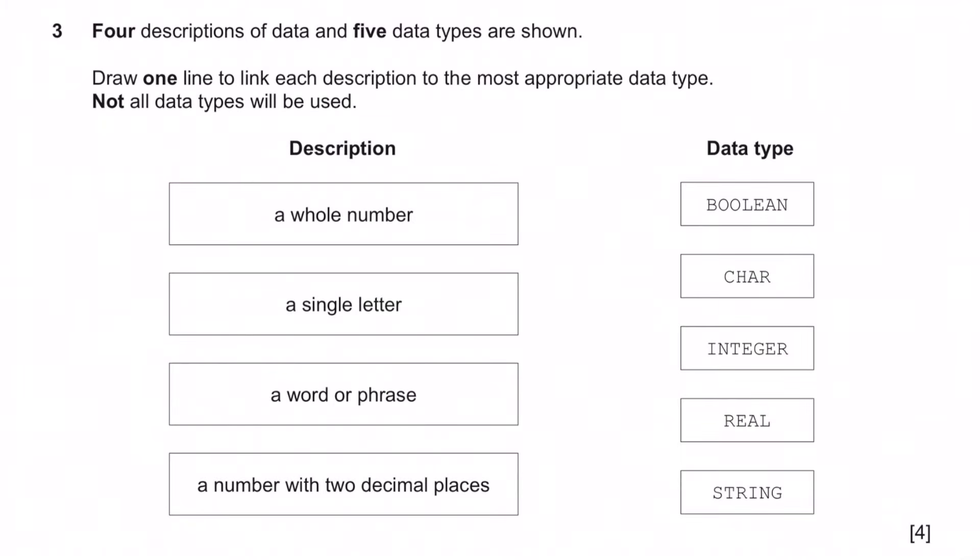Question 3: Four descriptions of data and five data types are shown. Draw one line to link each description to the most appropriate data type. A whole number is an integer. A single letter is a character. A word or phrase would be a string. And the number with two decimal places we would call that a real number. In Python you'd call it a float, whereas here it's called a real number. Boolean is basically a yes or no answer.